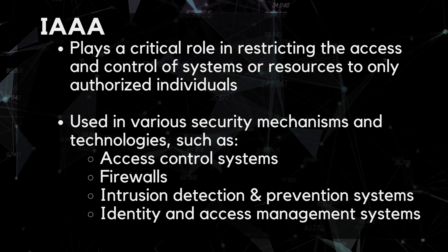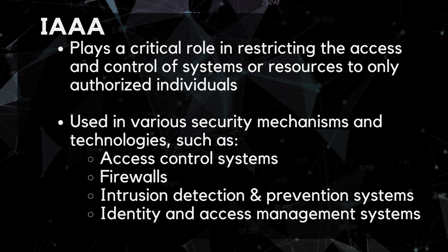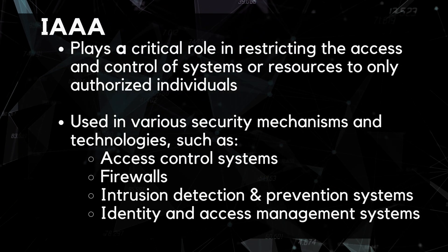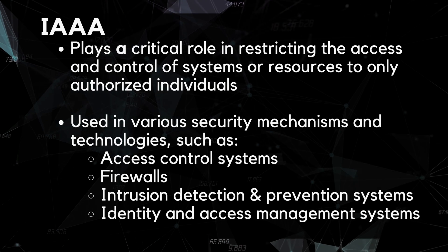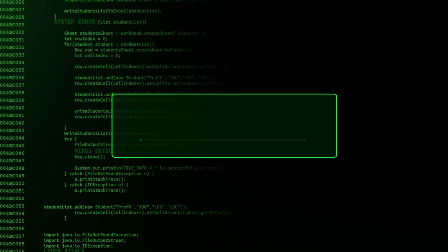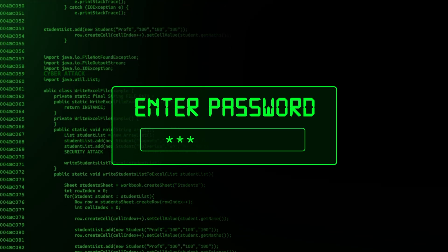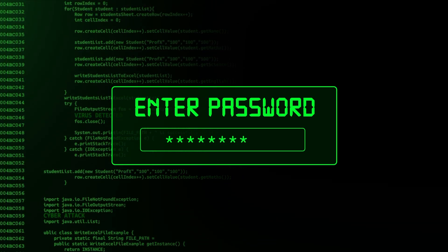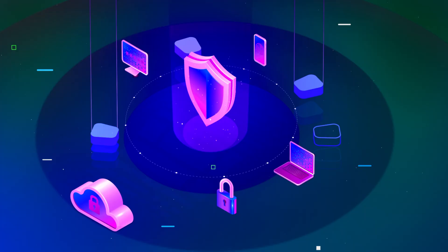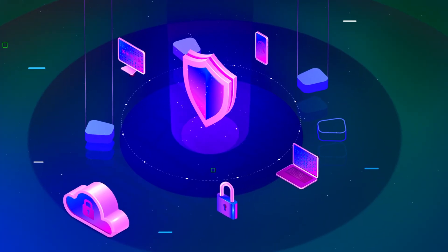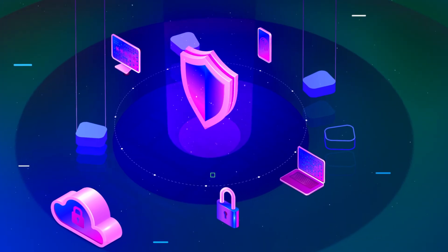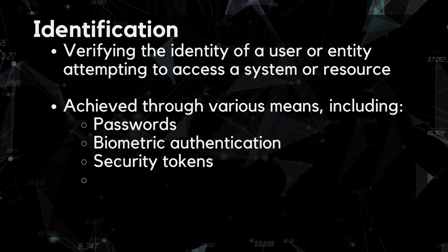IAAA is used in various security mechanisms and technology, such as access control systems, firewalls, intrusion detection and prevention systems, and identity and access management systems. By implementing IAAA principles, organizations can ensure that only authorized users are allowed access to sensitive information and resources, and that all user activity is monitored and audited to detect and prevent security breaches.